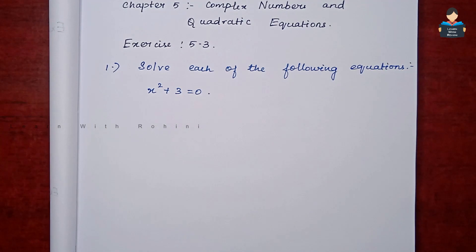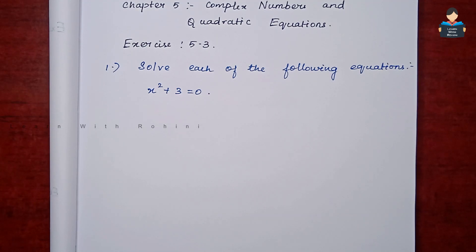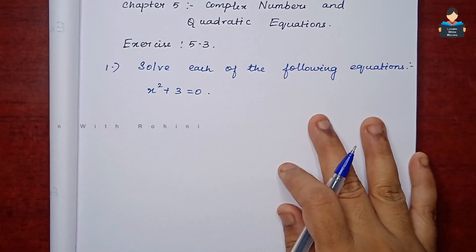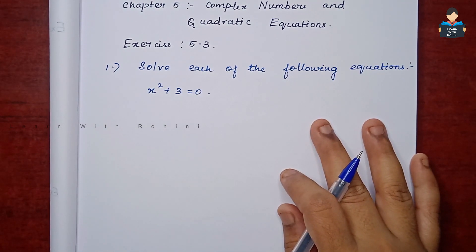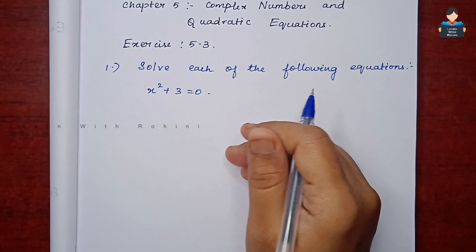Hello everyone, welcome to our channel. In this video, we cover 11th standard NCERT Maths Chapter 5: Complex Numbers and Quadratic Equations, Exercise 5.3. The first sum: solve the equation x² + 3 = 0.